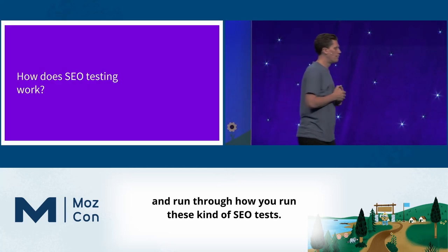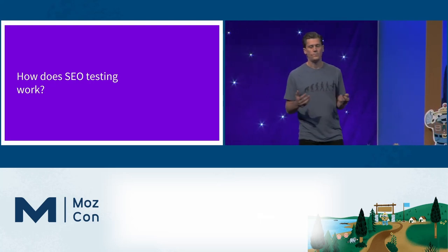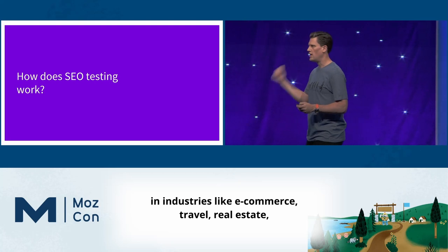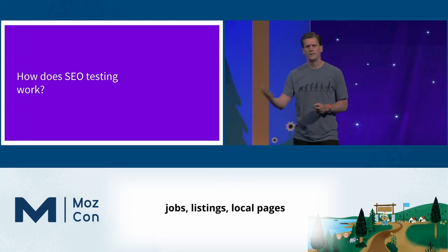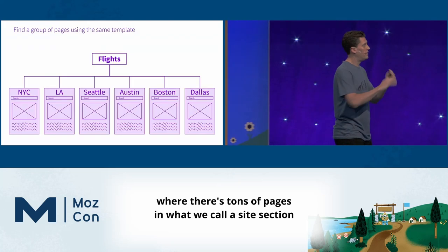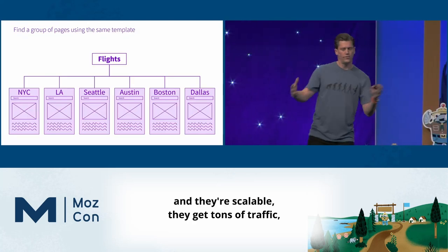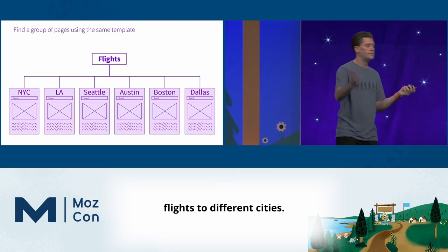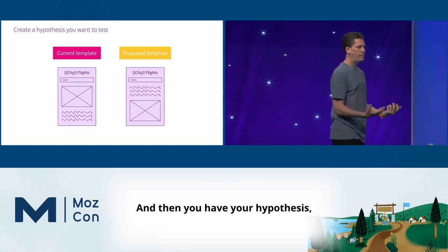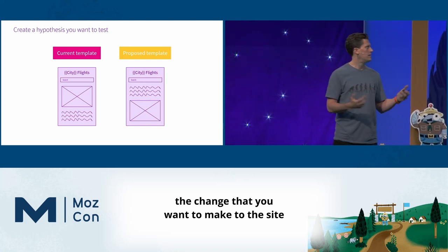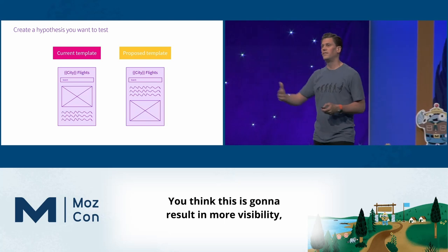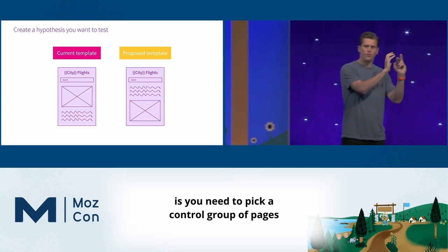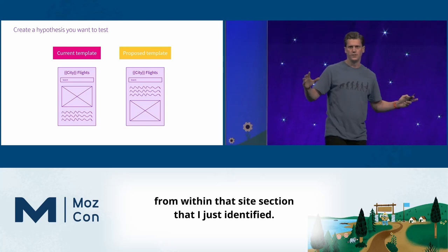Let's run through how you run these SEO tests. It works on large websites — we mainly work with very large websites in industries like e-commerce, travel, real estate, jobs, listings, local pages — where there are tons of pages in what we call a site section. They're scalable, get tons of traffic, and are set up in a similar way. You have your hypothesis — the change you want to make — and then you pick a control group of pages and a variant group from within that site section. You're looking for groups of statistically similar pages: one group stays unchanged as the control, and one gets the hypothesis applied.